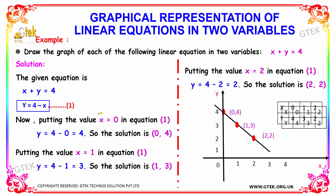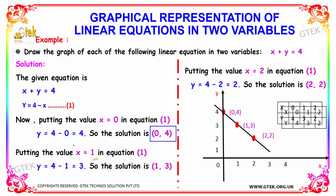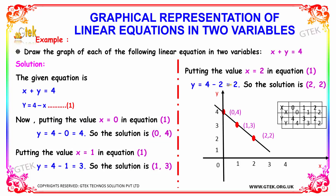Putting x equal to 0 in the equation, we get y equal to 4 minus 0, so y equal to 4. The solution is (0, 4). Putting x equal to 1, we get y equal to 4 minus 1, so y equal to 3. The solution is (1, 3). Substituting x equal to 2, we get y equal to 4 minus 2, so y equal to 2. The solution is (2, 2).